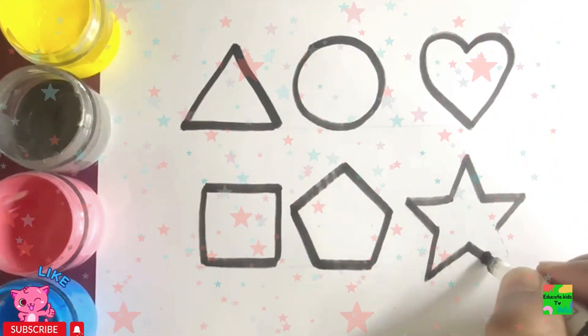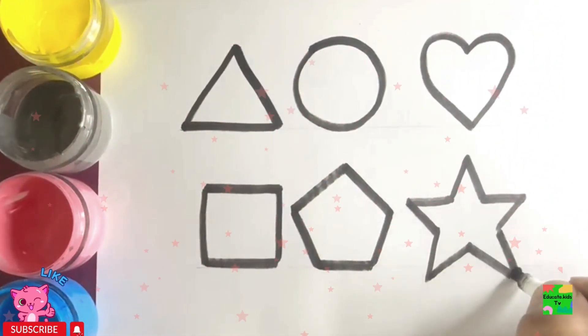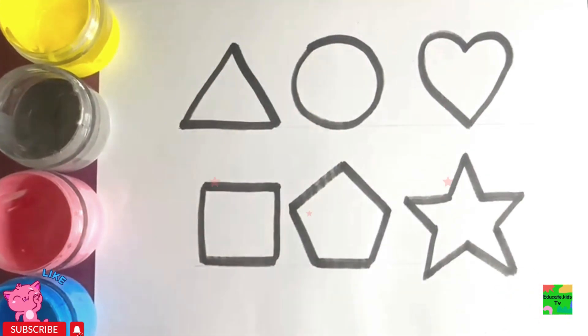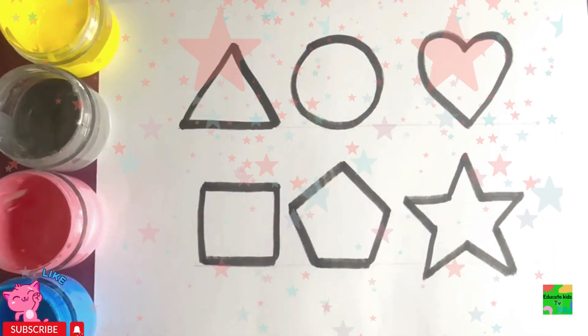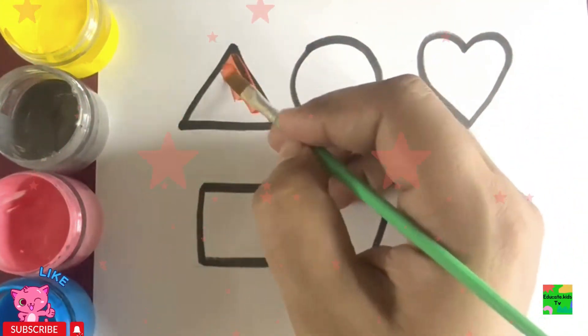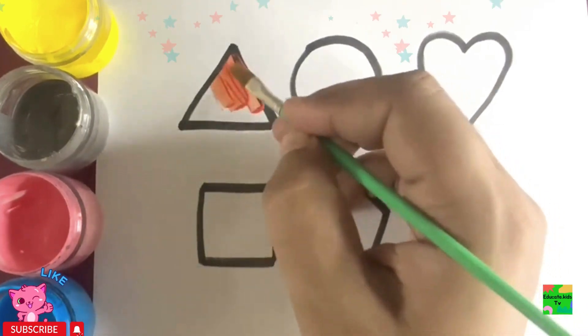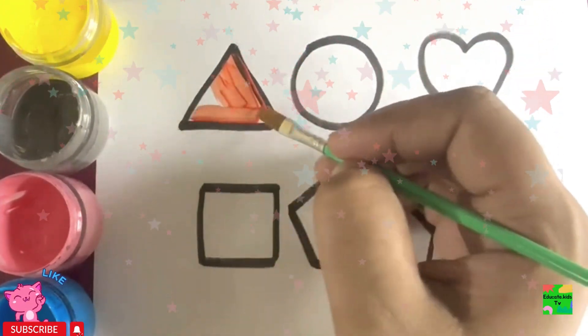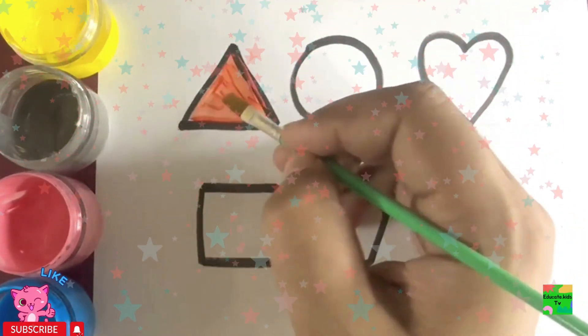It's paint time now. Yay! Let's start our paint. Triangle, orange color. Hooray! I love drawing and painting the shapes.